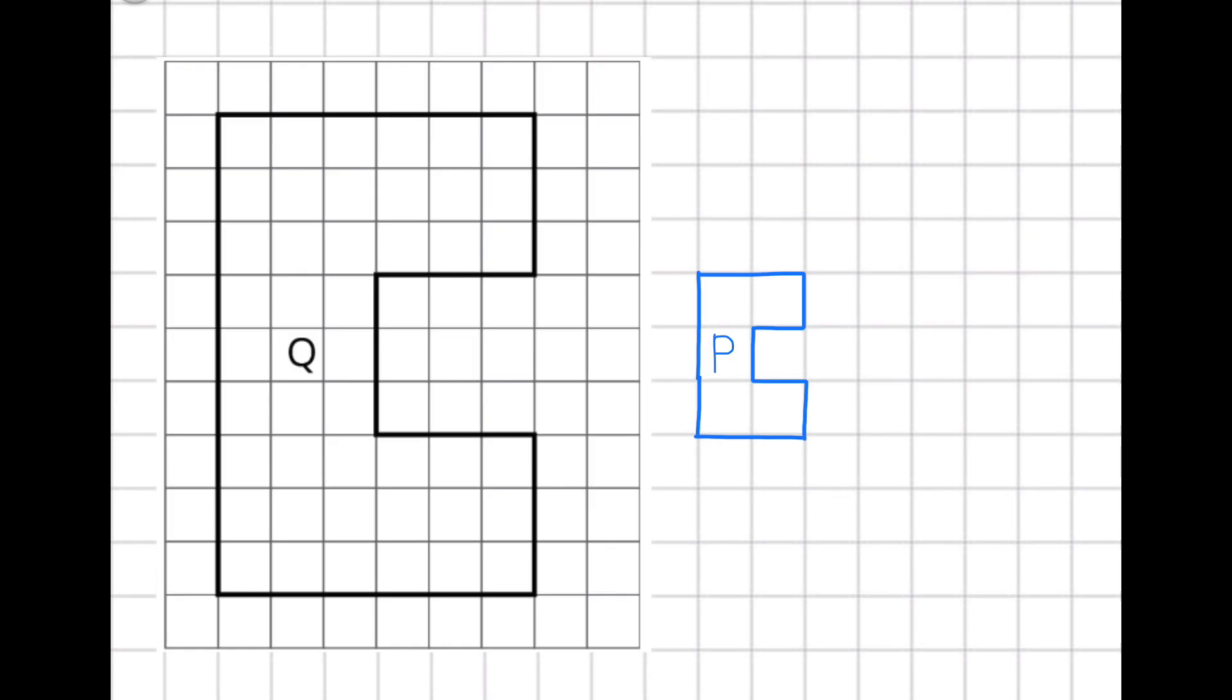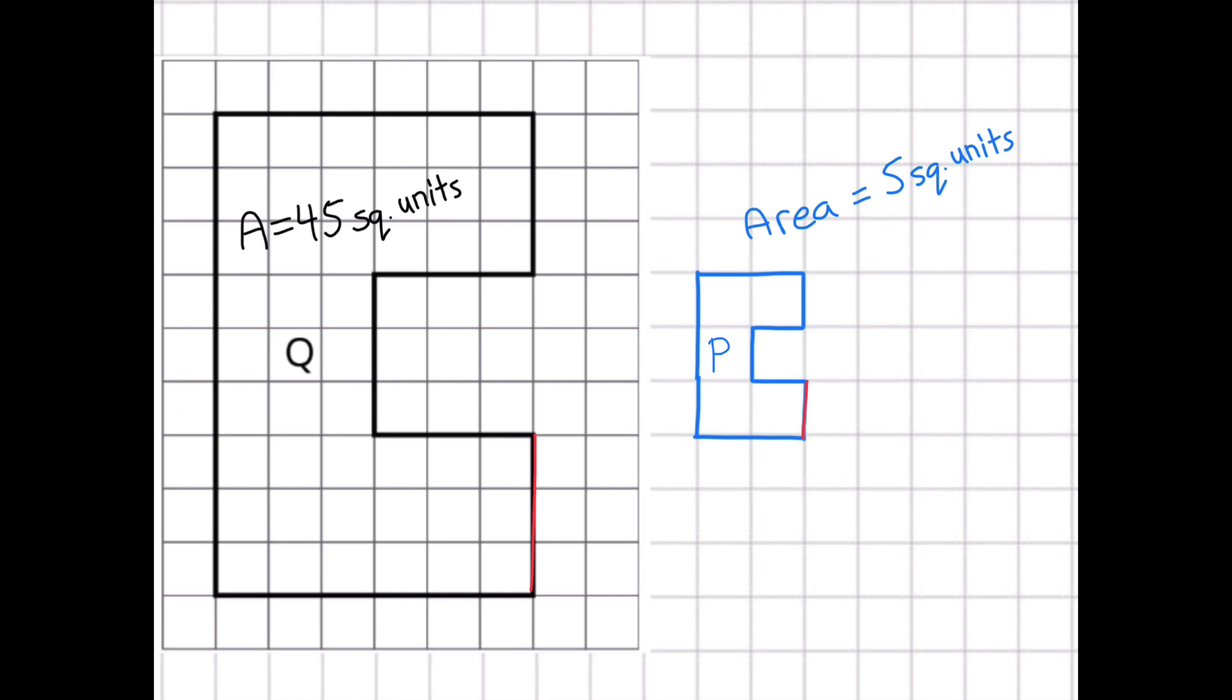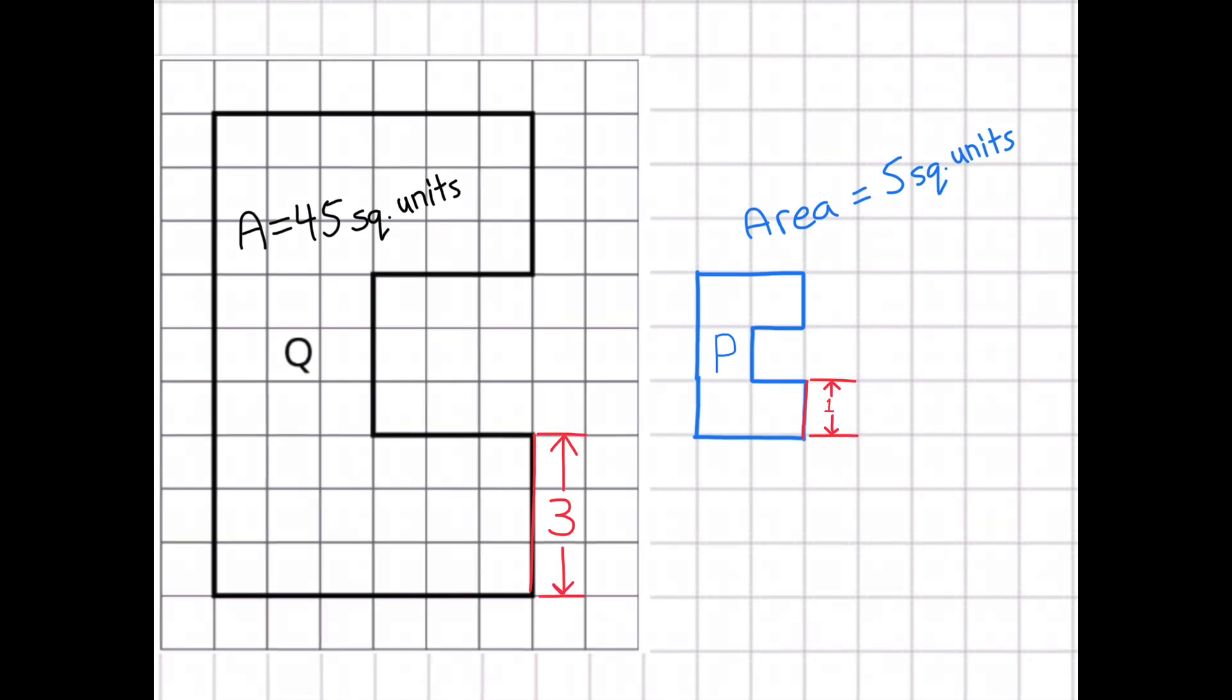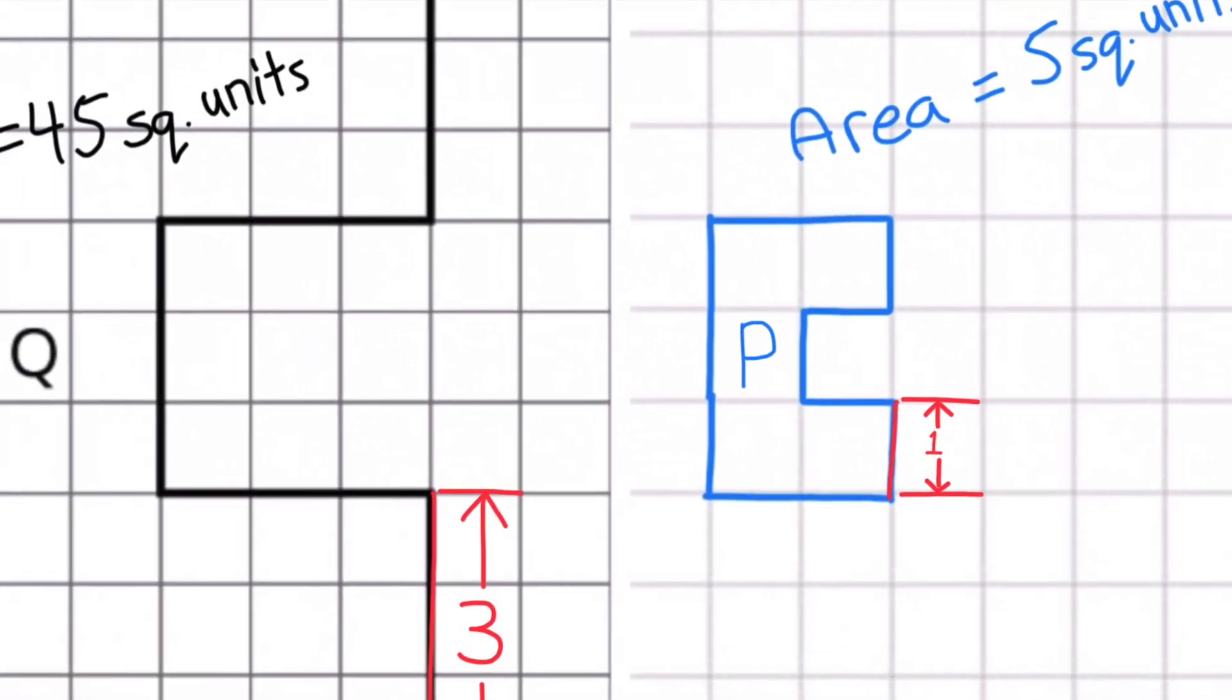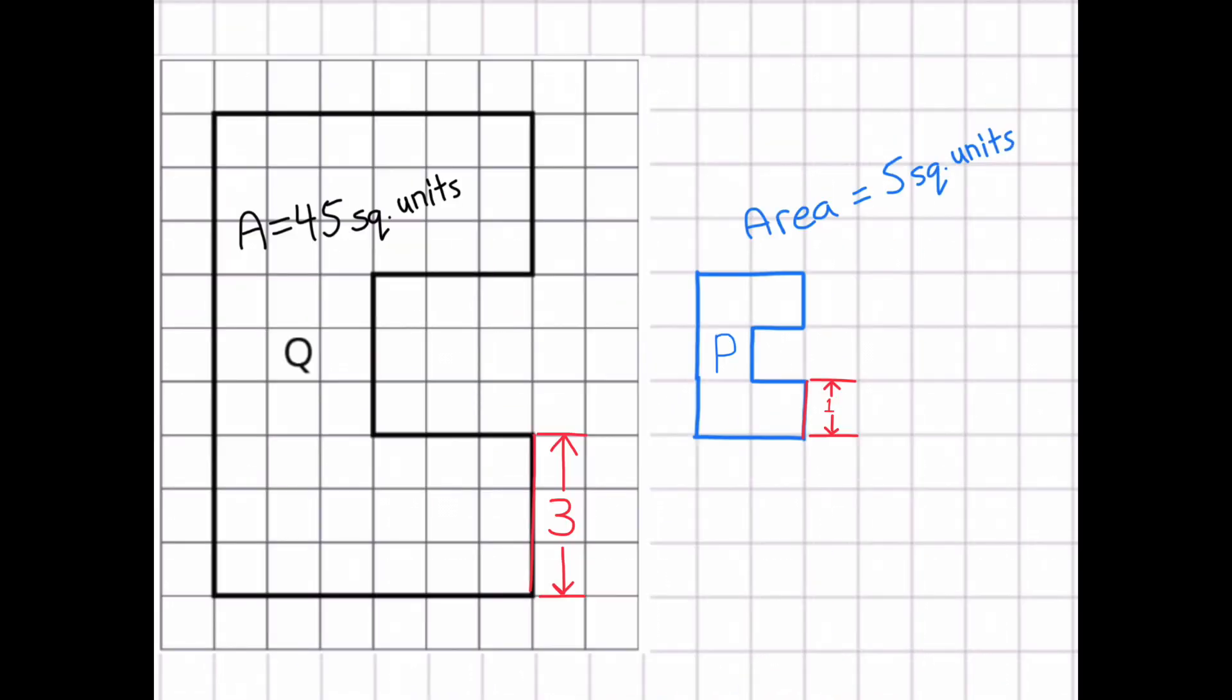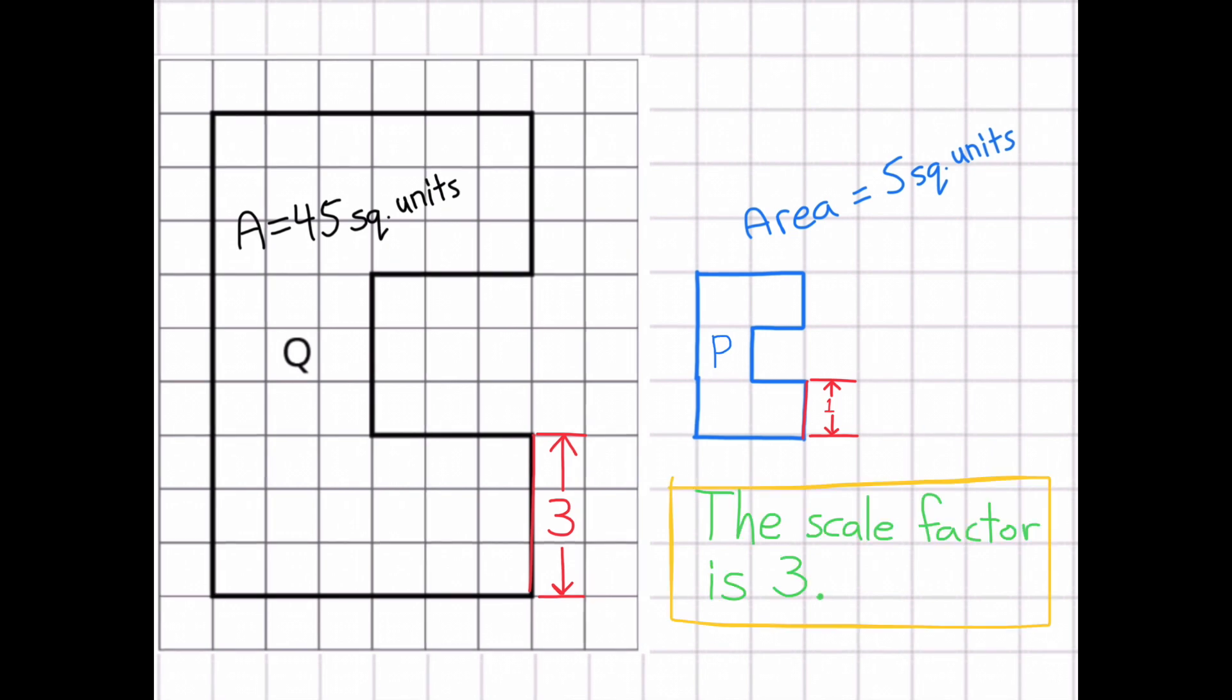On the left side is Polygon Q with an area of 45 square units, and on the right side is Polygon P with an area of 5 square units. I labeled a length on Polygon Q 3 units, and I labeled its corresponding length of 1 unit on Polygon P. To go from a length of 1 unit on Polygon P to 3 units on Polygon Q, that would increase by a scale of 3, so the scale factor is 3.